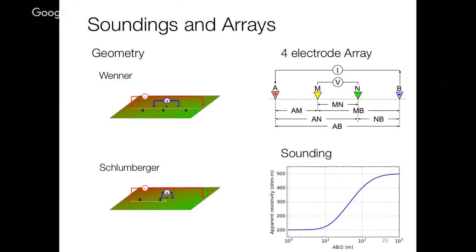The one thing we didn't explicitly talk about was different geometries. We talked about soundings, where you take a particular geometry and expand it around some central point. There's the Wenner sounding, in which the distances between all the electrodes are A — that's what you used in the lab. There's also the Schlumberger experiment, in which you have A and B but the potential electrodes are a little more on the inside. They're basically kissing cousins, but sometimes you'll hear somebody say they're doing a Schlumberger versus a Wenner — the only difference is where those potential electrodes are.